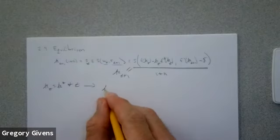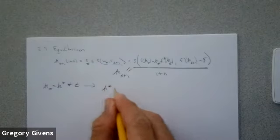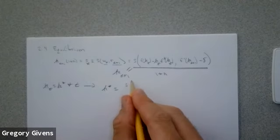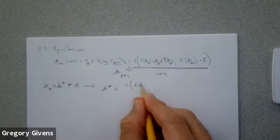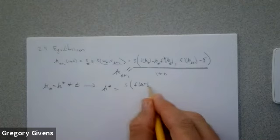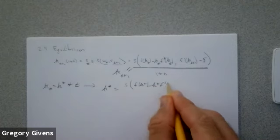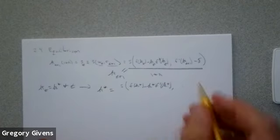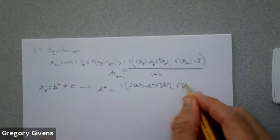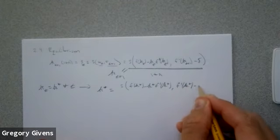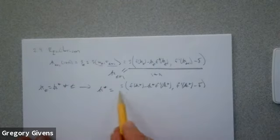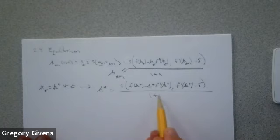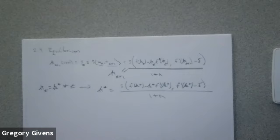What do we get? K* equals S of [F(K*) minus K* times F'(K*)], which is the steady-state wage, and F'(K*) minus delta, which is the steady-state real return to capital, divided by one plus n. So if a steady state exists, it has to satisfy this equation.